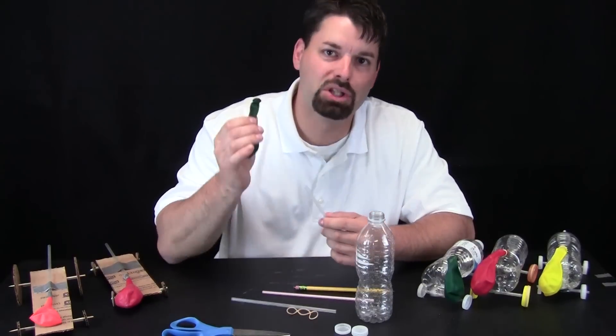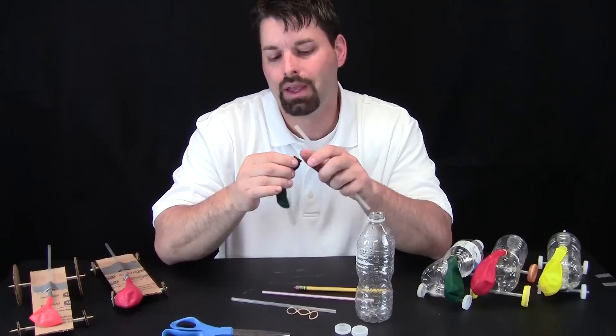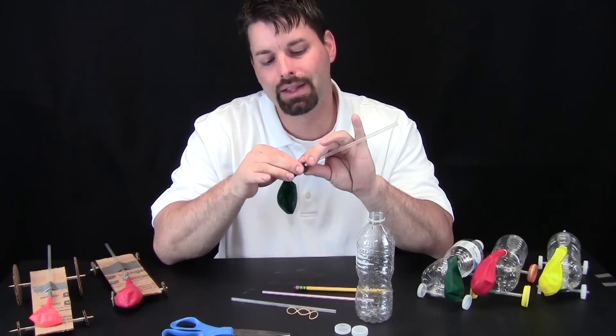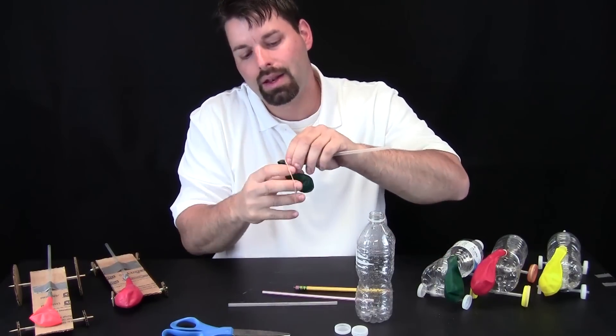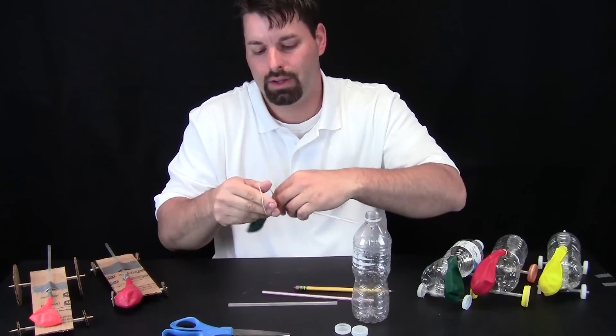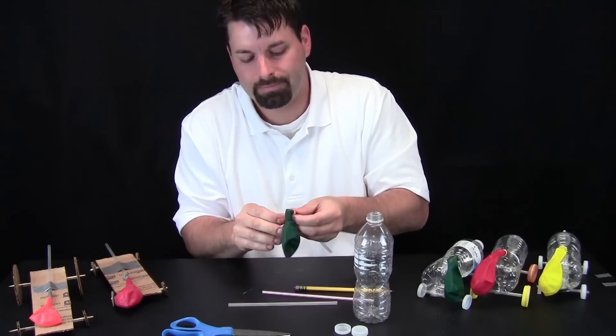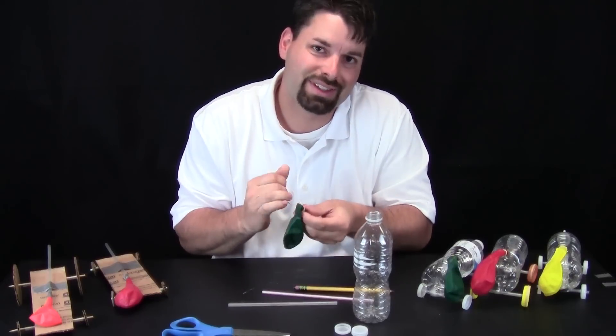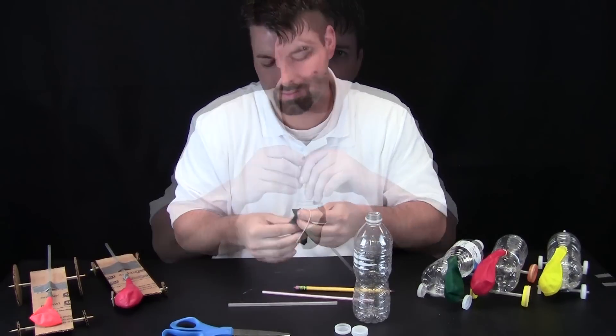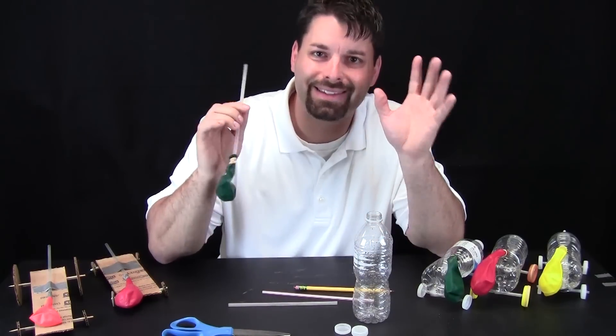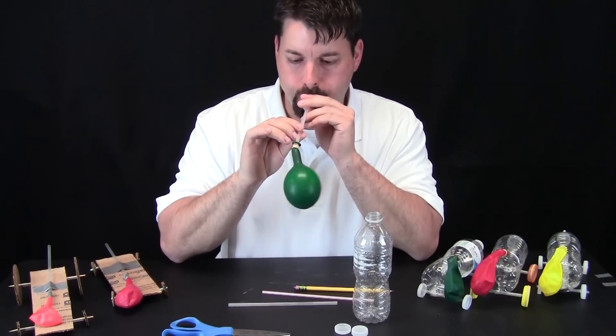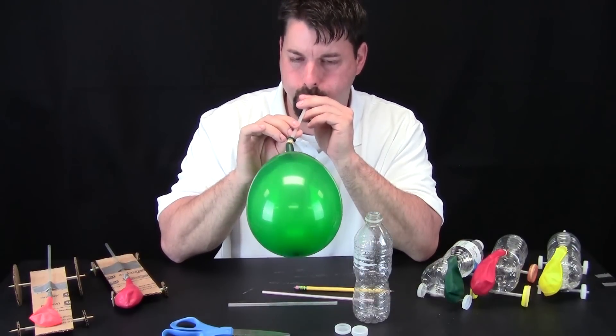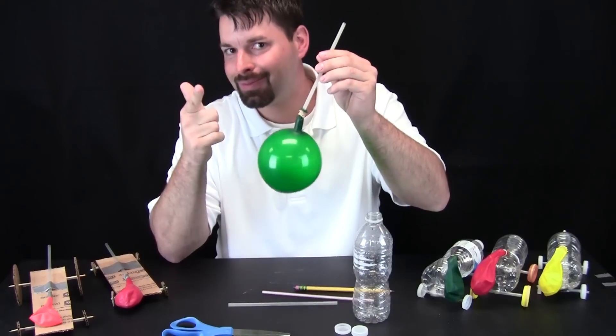Our first step is attaching the balloon to the straw. I'm going to slide the balloon, the neck of the balloon, over the end of the straw. Take my rubber band and keep twisting it and looping it over till it's tightly fastened to the straw. Let's test it to make sure it holds air and nothing leaks out. Success!